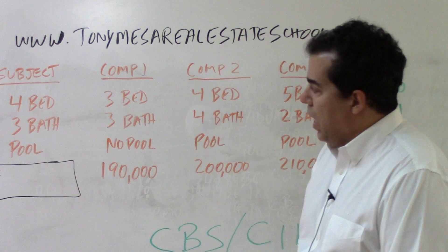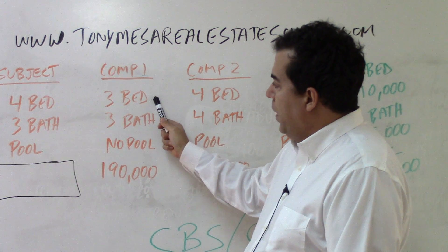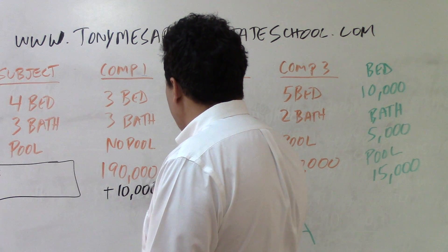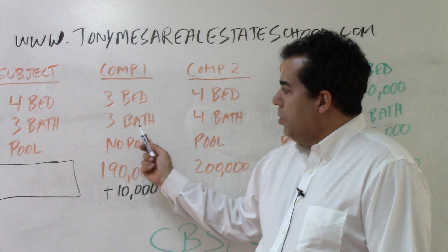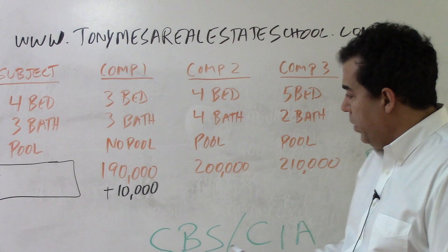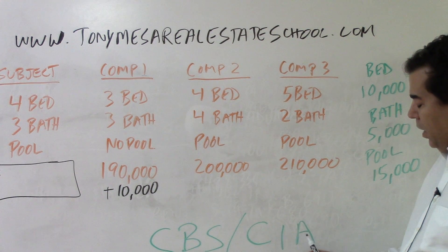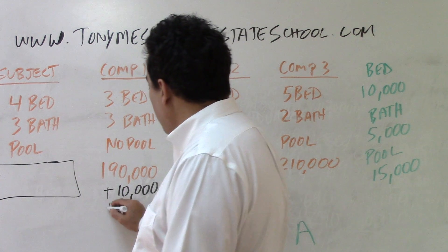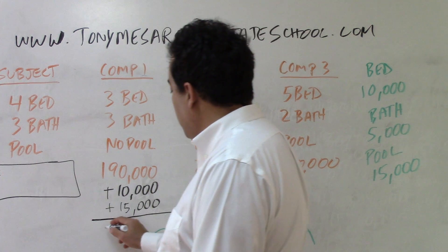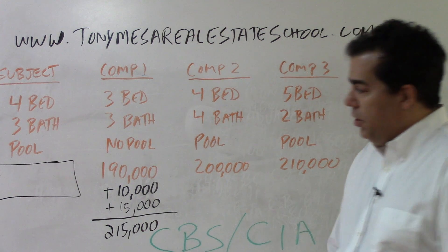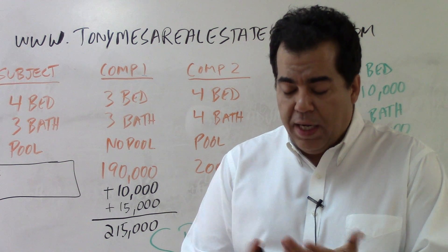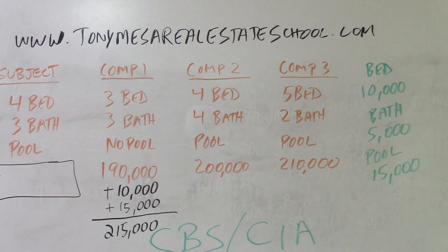For comparable number one: the subject has four bedrooms, the comp has three — the comp is inferior, so CIA, we add $10,000. Bathrooms are both three — same, no adjustment. The subject has a pool, the comp does not — comp is inferior, so we add $15,000. Taking $190,000 plus $10,000 plus $15,000 gives us $215,000 as the adjusted sales price of comparable sale number one.